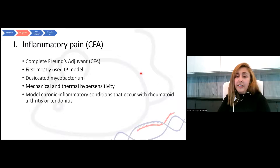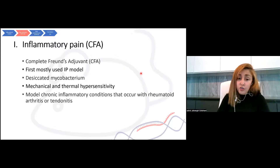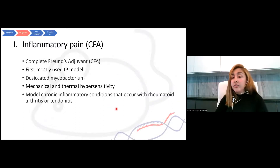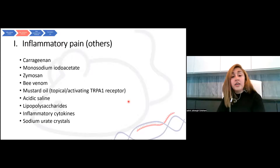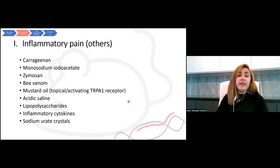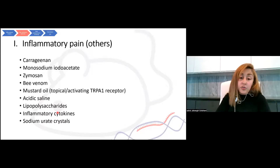The last inflammatory irritant is complete Freund's adjuvant (CFA). It contains killed mycobacterium, which causes inflammation and is injected into animals. It produces mechanical and thermal hypersensitivity and is a useful tool for making chronic inflammatory conditions that occur with rheumatoid arthritis and tendonitis. There are also other irritants that can be used for inflammatory pain models: carrageenan, iodoacetate, zymosan, bee venom, mustard oil (topical or injected), acid, inflammatory cytokines, and sodium urate crystals.